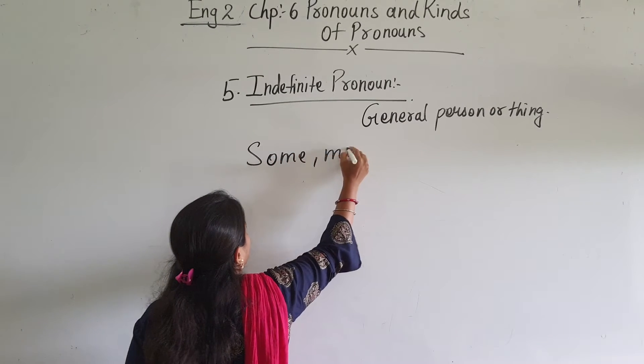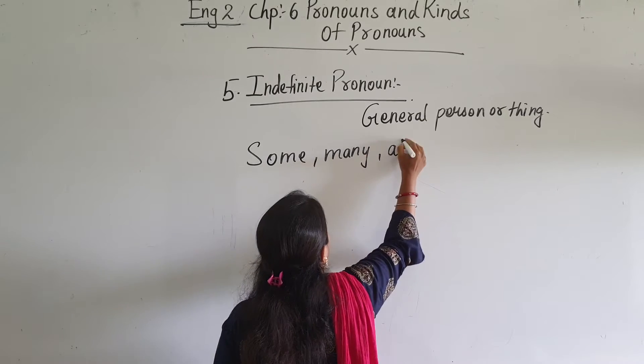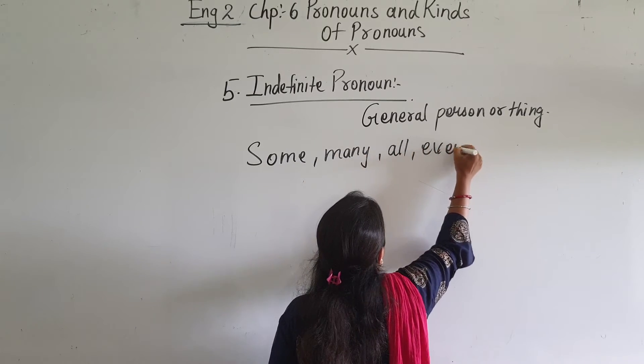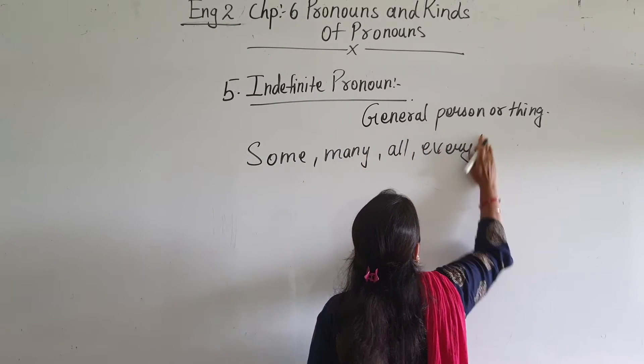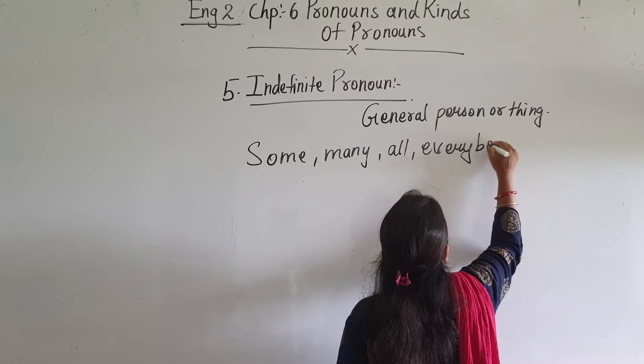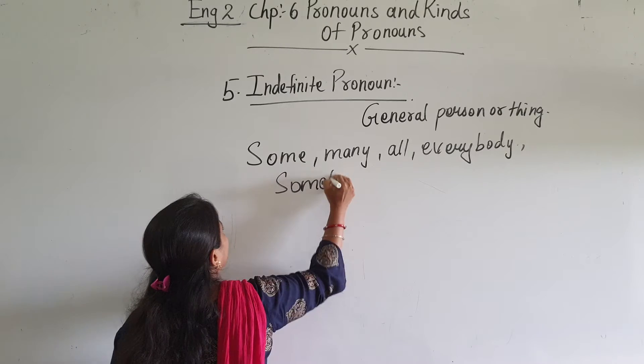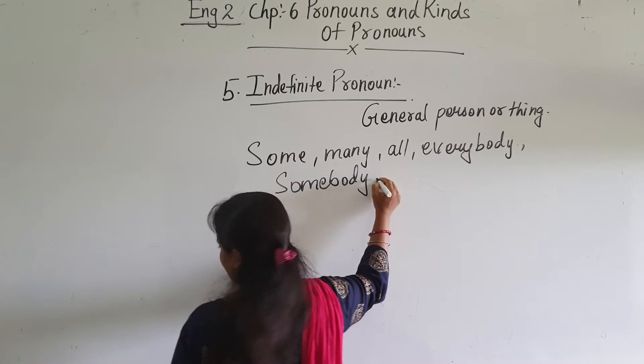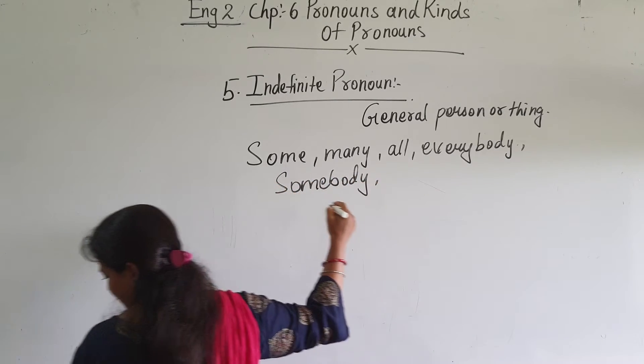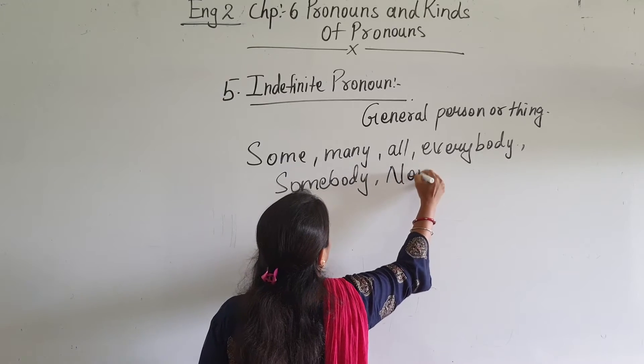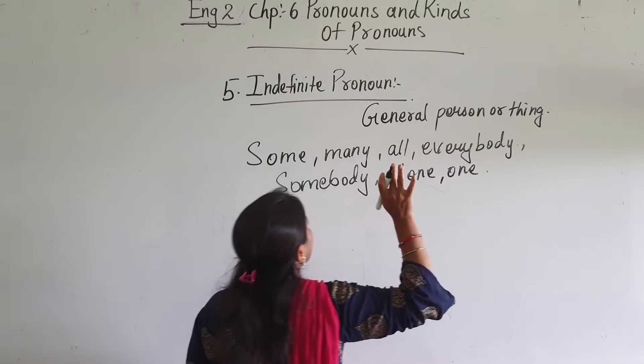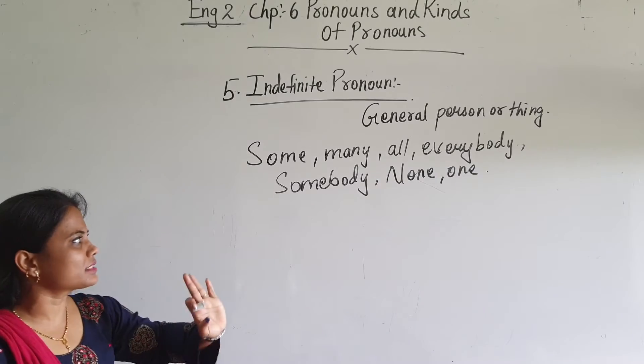For example, they are like some, many, all, everybody, somebody, none, one - these all are general persons.